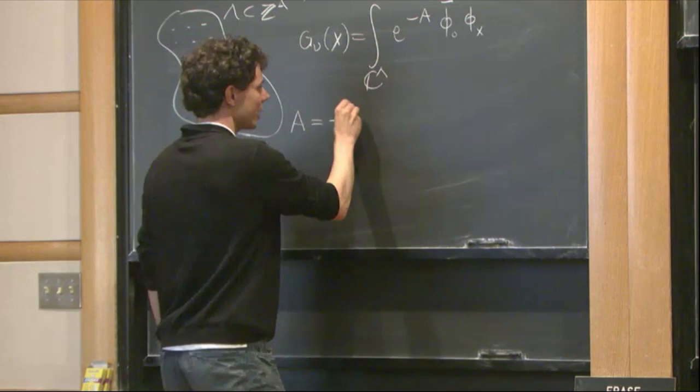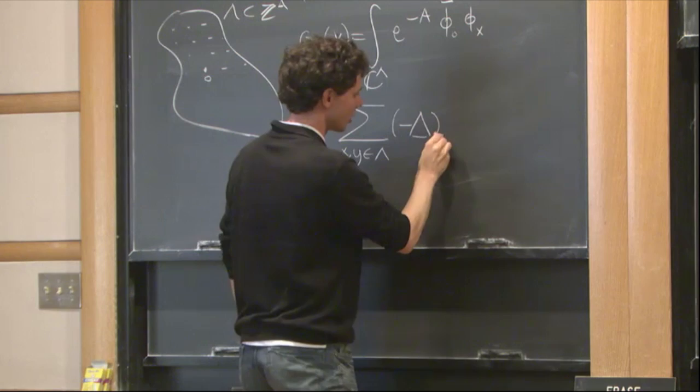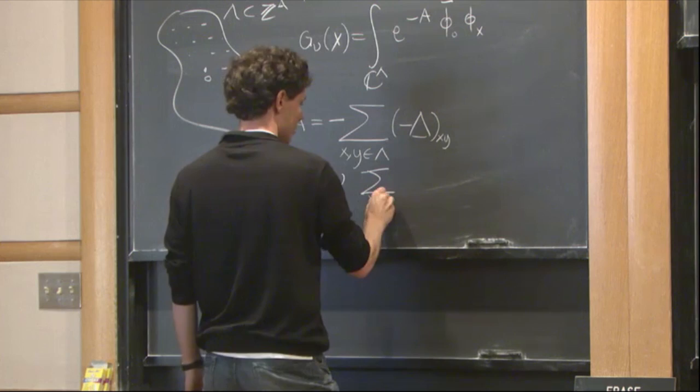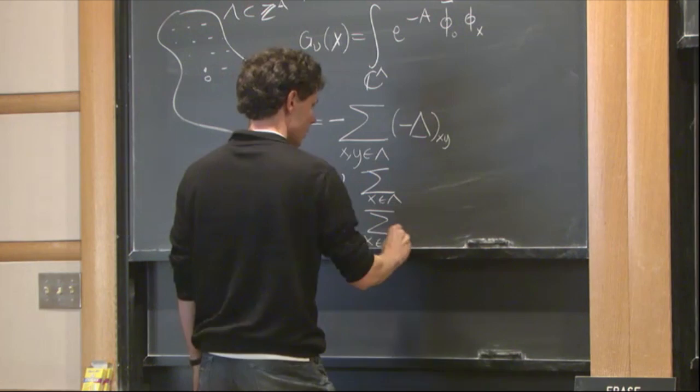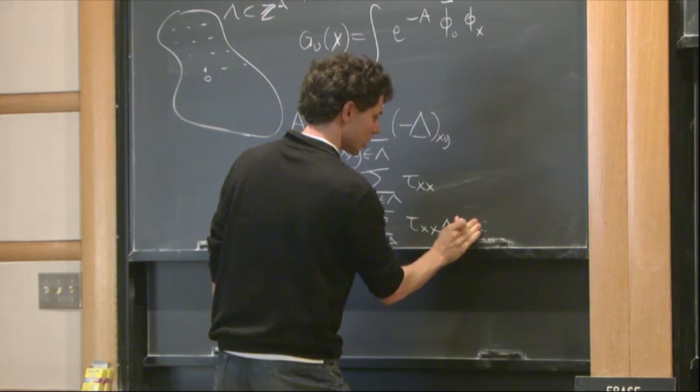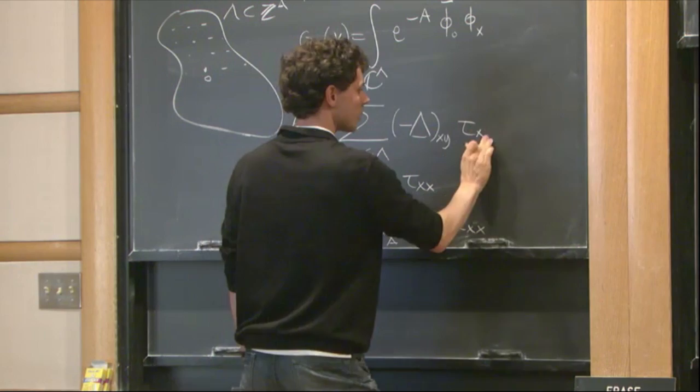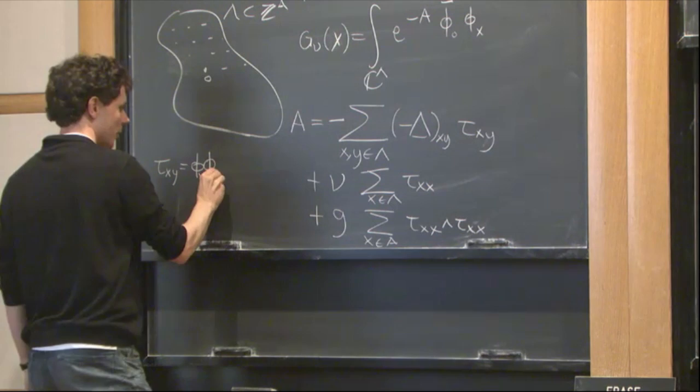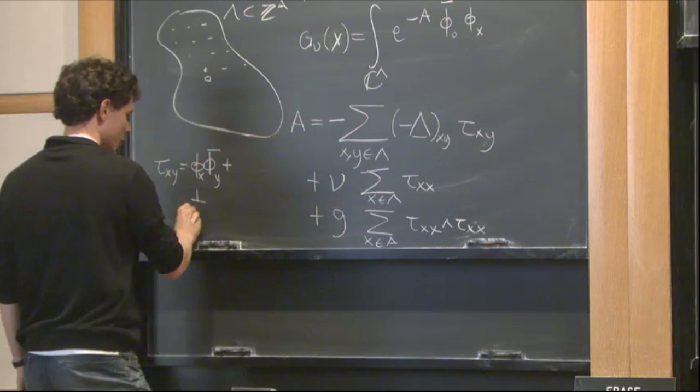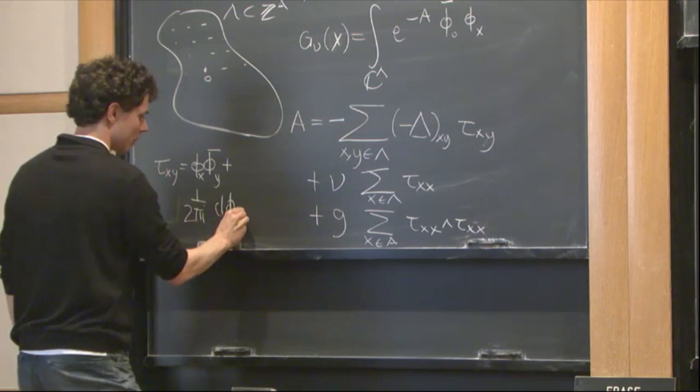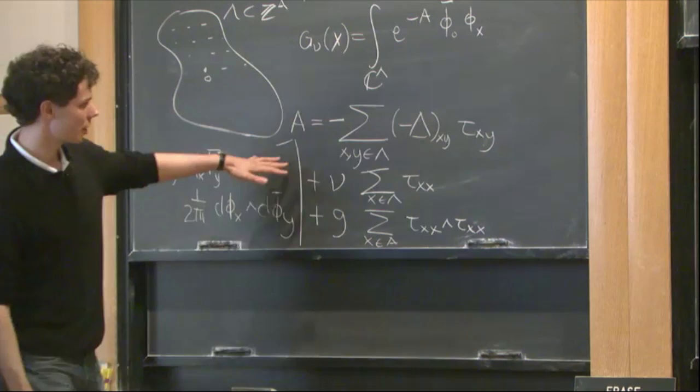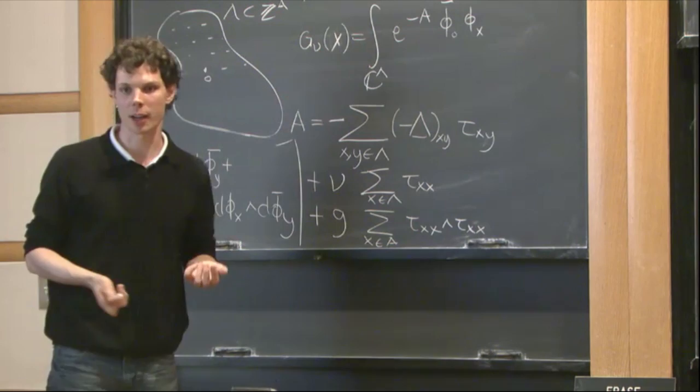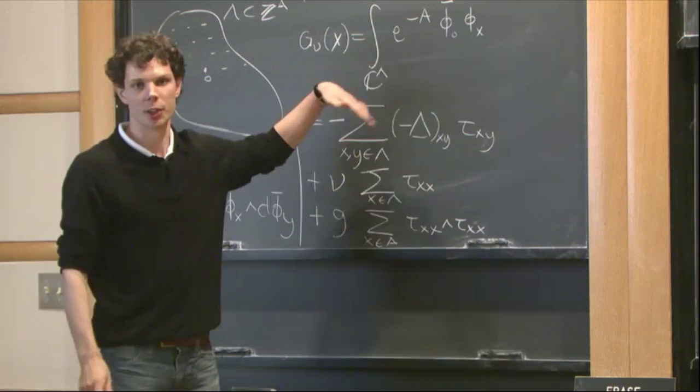It involves the discrete Laplace operator. And then it has three terms. Let me, I'll say what tau is in just a second. Where tau_xy is the differential form phi_x phi_y bar plus 1/(2πi) d phi_x wedge d phi_bar y. Sorry, this is a little bit small here. So this is a differential form. It has even degree. So you can make sense of this exponential by simply expanding it out and multiplying with the wedge product. You obtain a differential form. For the integral, you only consider the top degree part, and then this is an equality.